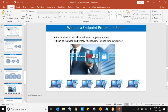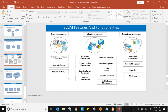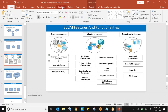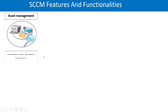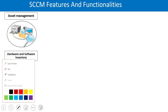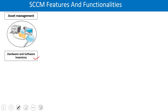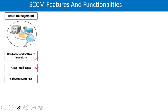SCCM features include hardware and software inventory — you can get inventory details of all computers without writing anything down manually. Asset intelligence helps categorize software and provides license consumption details. Software metering gives you software utilization details.